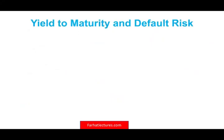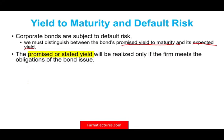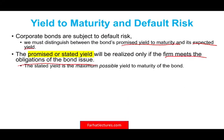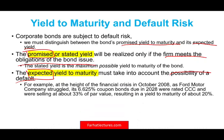Let's talk about yield to maturity and default risk. Corporations may be subject to default, so we must distinguish between a bond's promised yield to maturity and its expected yield. The promised yield will be realized only if the firm meets all its bond obligations — that's the maximum you will earn. The expected yield to maturity must take into account the possibility of default, meaning you may not receive all promised payments.